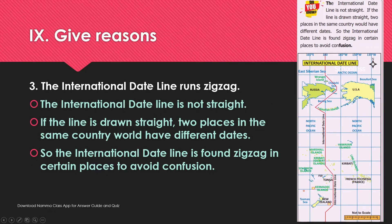The International Dateline runs zigzag. This is the International Dateline — it does not run in a straight line.